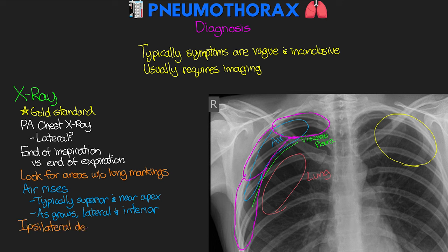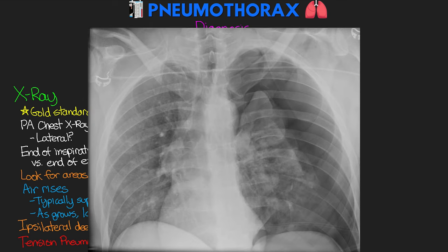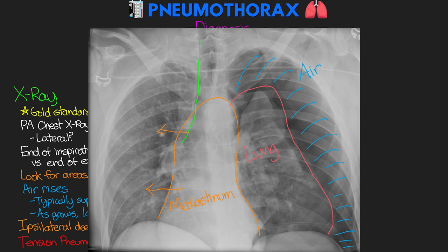An ipsilateral deep sulcus sign might also be indicative of a pneumo on that side. A tension pneumothorax — here's an example — is actually going to be a little bit more obvious, as the lung is going to be either almost completely or completely collapsed, leaving all this area of air. We're also going to be able to observe the mediastinal shift and the tracheal deviation away from that affected side.